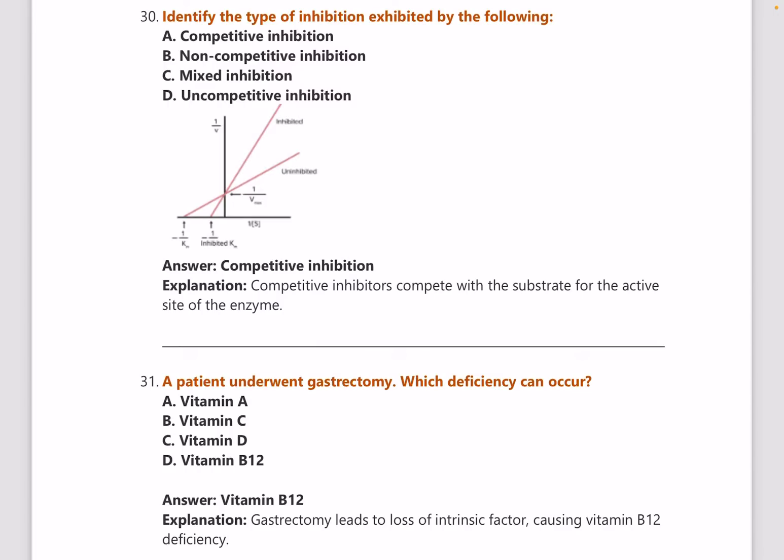Other than that trick, you need basic knowledge about these enzyme inhibition graphs, as there are two types. Please go through the explanation about how these are derived — it is a PYT that keeps repeating.